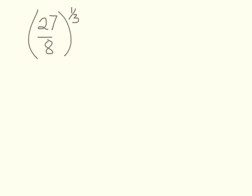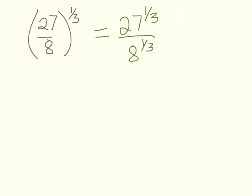Next: 27 over 8 in parentheses raised to the 1/3 power. Instead of dividing and getting a weird decimal, split it into 27 to the 1/3 over 8 to the 1/3, because both are perfect cubes. The cube root of 27 is 3, and the cube root of 8 is 2, giving 3/2.